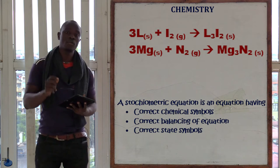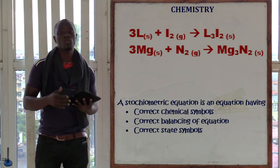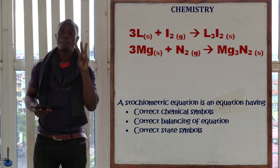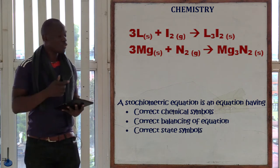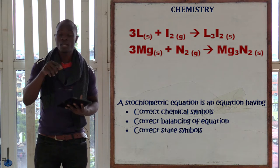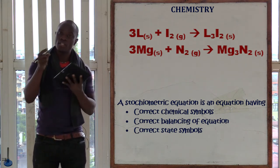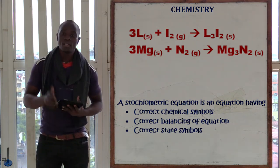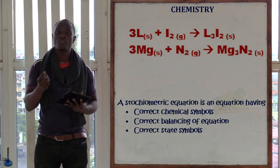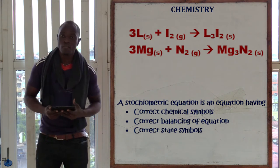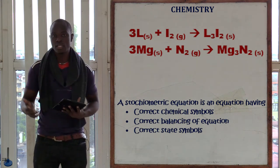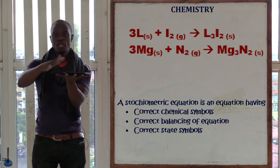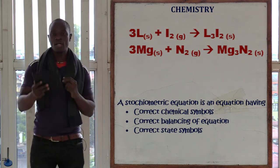Always include state symbols in a stoichiometric equation. The word stoichiometric means the equation must have the correct state symbols, chemical symbols, and balanced equation. The state symbol for L (a metal) is (s). The state symbol for I (nitrogen gas) is (g). The product is a solid (s) because exposing a metal to a gas still gives a solid product — the metal becomes coated with a layer of the gas.